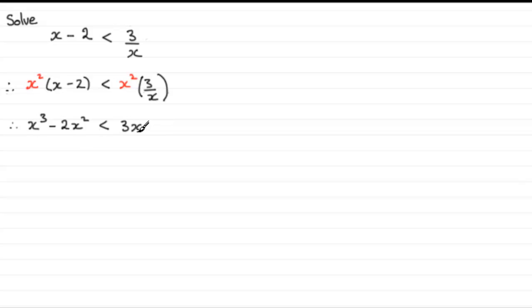Now we've got a cubic here so we need to subtract 3x from both sides and make it less than 0. So we get therefore x cubed minus 2x squared minus 3x is less than 0.